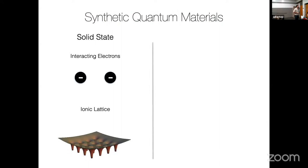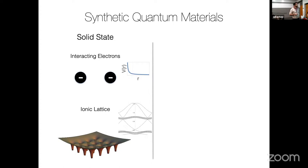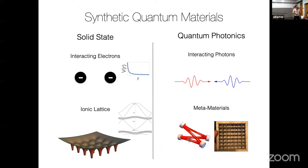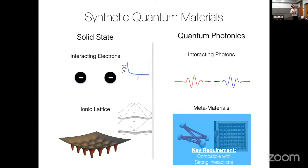Taking a step back, in a solid-state material the interactions between electrons come from the Coulomb potential, and we can change the dispersion relation of electrons by trapping them in an ionic lattice that creates band structure. What we're going to do is use some material to mediate interactions between our photons, and trap them either in a multimode cavity or in a lattice of cavities to control their dispersion and make them act like massive particles that respond sensibly to forces. This is the broad overview of our science.